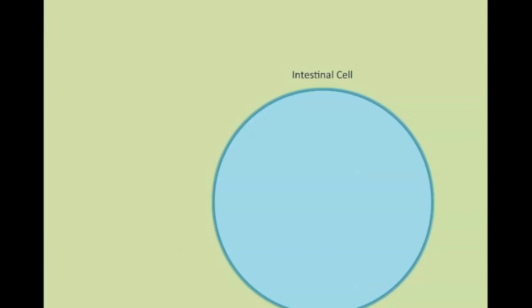Here you have the intestinal cell, and this rectangle within the intestinal cell represents the entire genome. Within the genome you have a region known as the MHC region, which is not drawn to scale of course. Part of the MHC region is a group of genes known as the HLA genes.